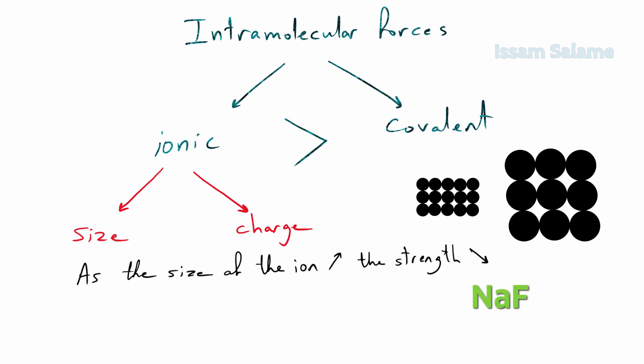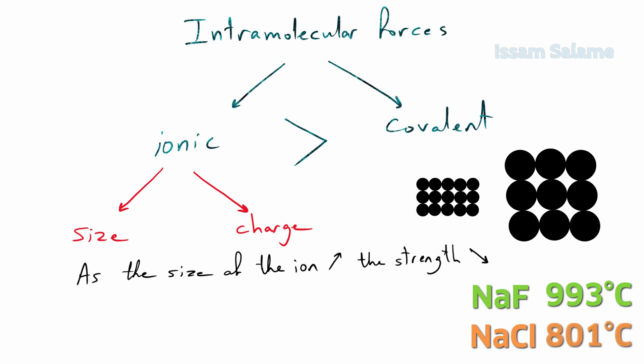For example, comparing the melting points of sodium fluoride and sodium chloride: the melting point of a substance is a good measure of the strength of attraction forces between its particles. The melting point of sodium fluoride is 993°C while sodium chloride is 801°C. This is because fluoride ions are smaller than chloride ions, so they are closer to each other and the ionic bond is stronger.